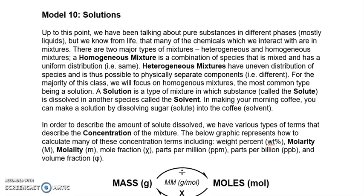In last week's video, one of the main things we were talking about was thinking about thermodynamics and interactions between just pure substances. For example, when we're thinking about phase diagrams and using equations like Q equals mc delta T and Q equals n delta H, we're thinking about a single substance like water and heating it up or cooling it down, understanding how much the temperature changes based on how much heat we add.